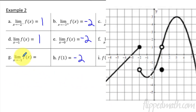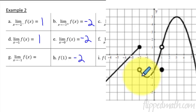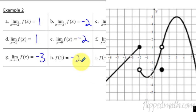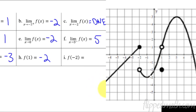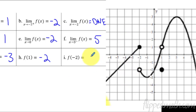And then the limit as x approaches negative 1 from both sides. Here's negative 1 — coming in from both sides, we're approaching a y value of negative 3. Finally, f of negative 2: that's the actual function value at x equals negative 2. There's an open circle down there and a filled-in circle up there, so f of negative 2 equals 1.